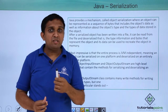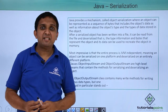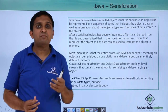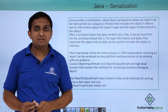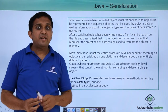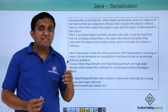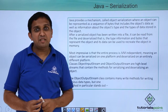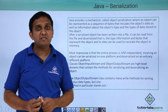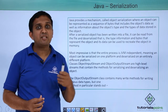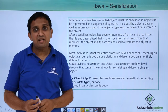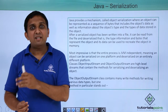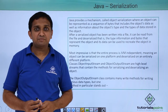The important thing about object Serialization and Deserialization is that it is platform independent. That means if I serialize the object on a Windows operating system, it is not necessarily that I will retrieve it onto the same OS. I can even retrieve it onto some other OS like Unix.